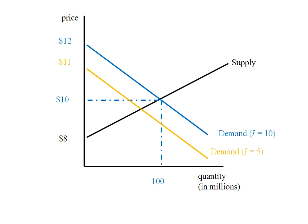What's left is to put on our equilibrium information. When income was $10,000, the price of aluminum was $10 and quantity was 100 million. When income was $5,000, the price fell to $9.50 and quantity fell to 75 million.